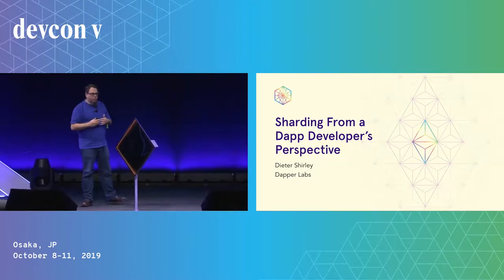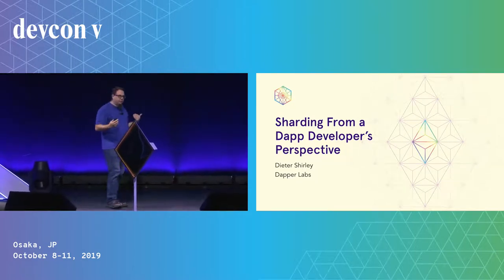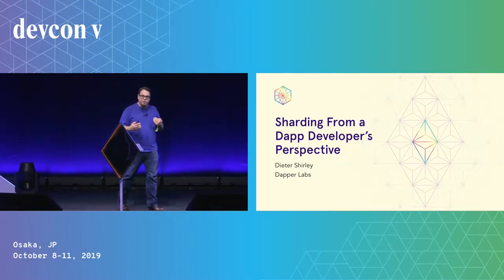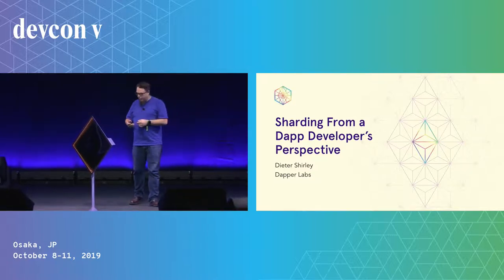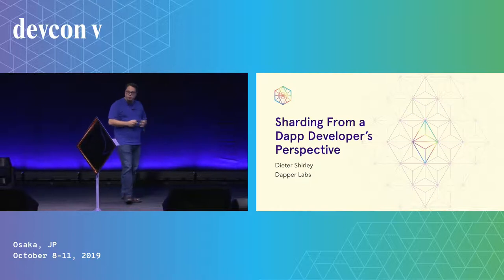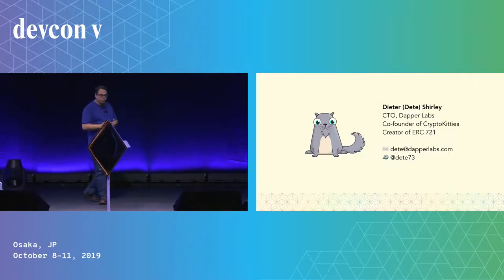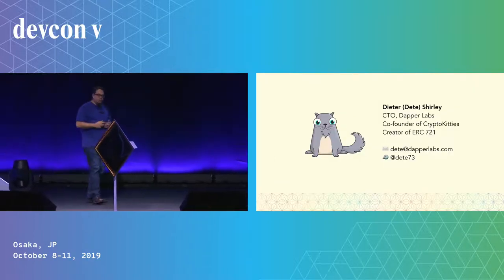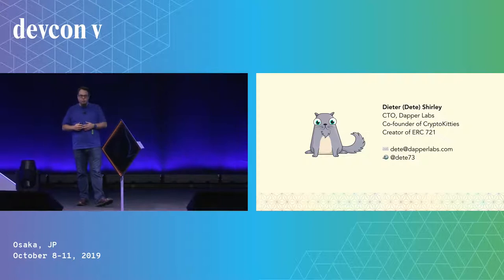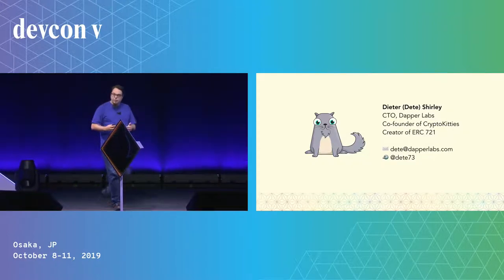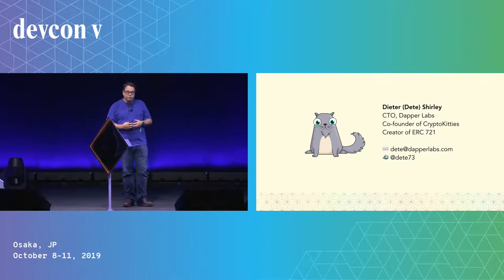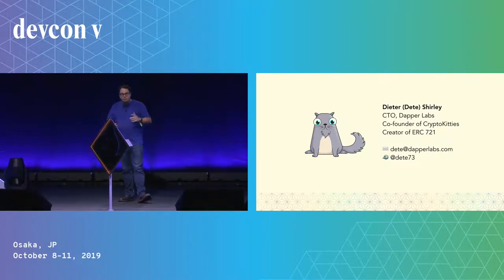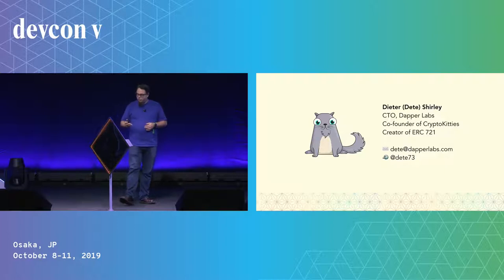I want to talk today about what it's like as a dApp developer to think about sharded blockchains, in particular asynchronous communication between smart contracts. From the introduction, you know that I'm one of the co-creators of CryptoKitties. I was also the original author of ERC721. I contributed quite a bit on the upcoming Cheese Wizards game, and I'm the chief architect of the upcoming Flow blockchain.